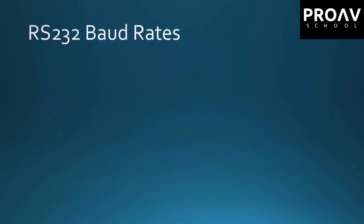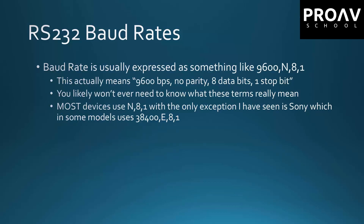Another big thing that comes into play is RS-232 baud rates. You'll usually see this expressed as something like 9600 N8-1. This actually means 9600 bits per second, no parity, eight data bits, one stop bit. But you most likely never need to know what that actually means — it would just be expressed as 9600 N8-1 or just 9600. Out of all the devices I've worked with, most of them are N8-1. It's only Sony that I've seen where it uses E8-1.